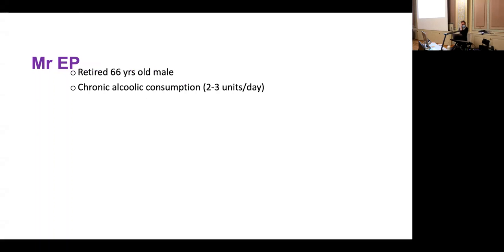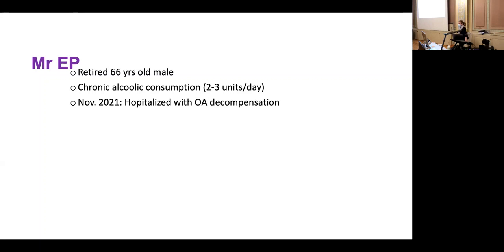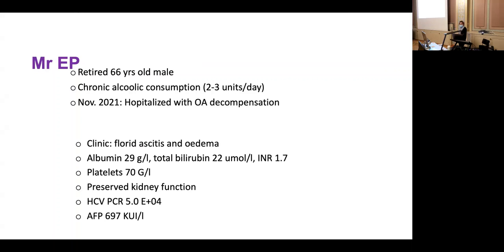The second case is a 66-year-old male of Italian origin with chronic alcohol consumption of two to three units per day. He was recently hospitalized in Lausanne with an oedematous-ascitic decompensation — the first event in his liver history. Clinically, he had significant ascites and edema. Liver function was altered, platelets were lowered, but kidney function was preserved.